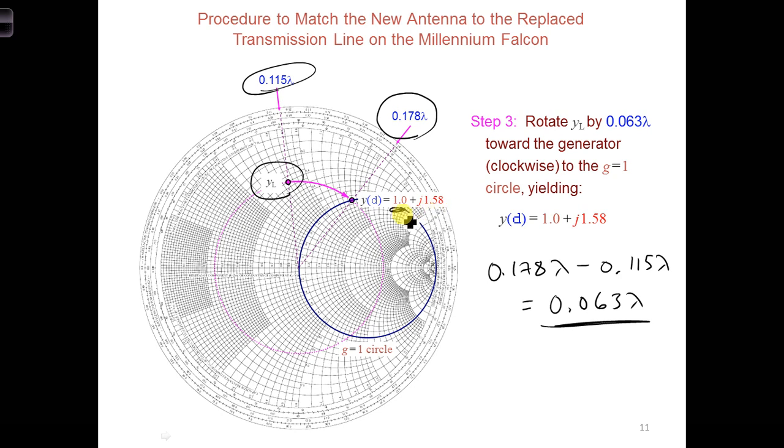This means if we can find a way to cancel this 1.58, J 1.58 value, we will have a normalized input admittance of 1.